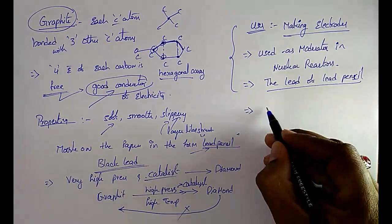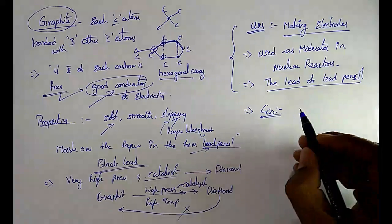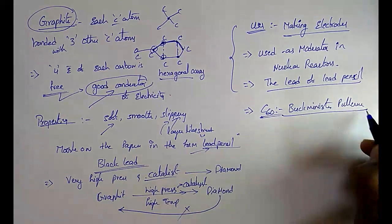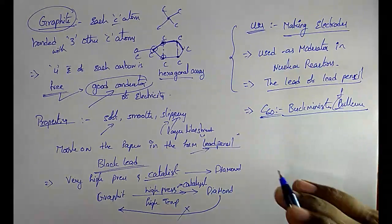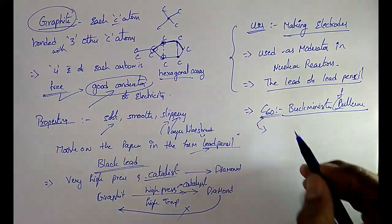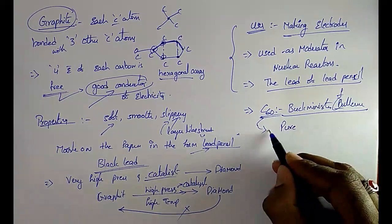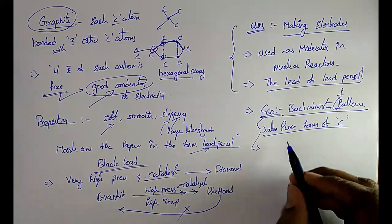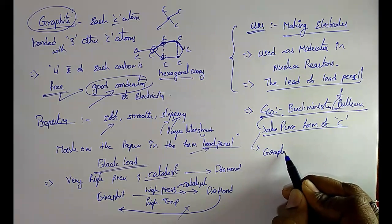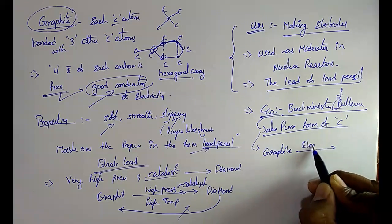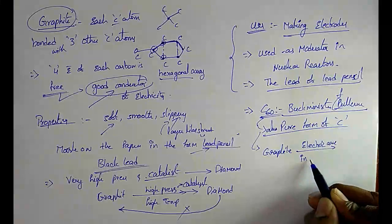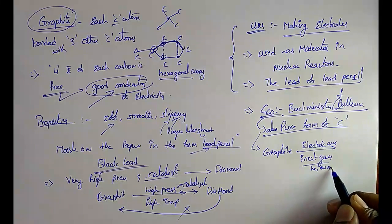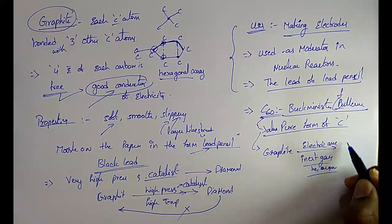The next allotrope of carbon is C60, also called Buckminster fullerene. C60 is almost the pure form of carbon. It is made by heating graphite with an electric arc in the presence of inert gases such as helium and argon, which converts it into C60.